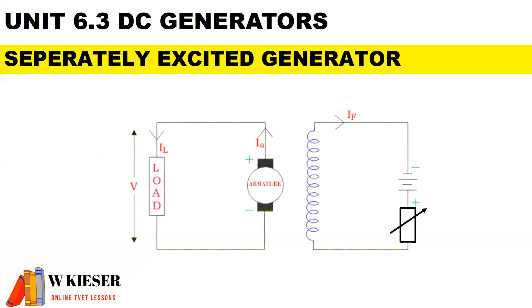Now we have a separately excited generator, which means that the DC supply to the field coils is completely separated from the armature. To influence the size of the excitation, we use a variable resistor.